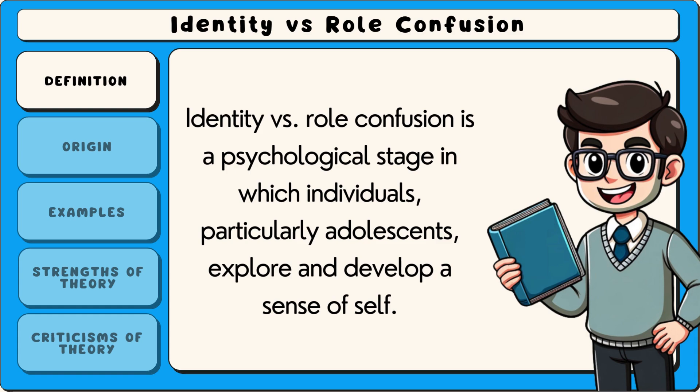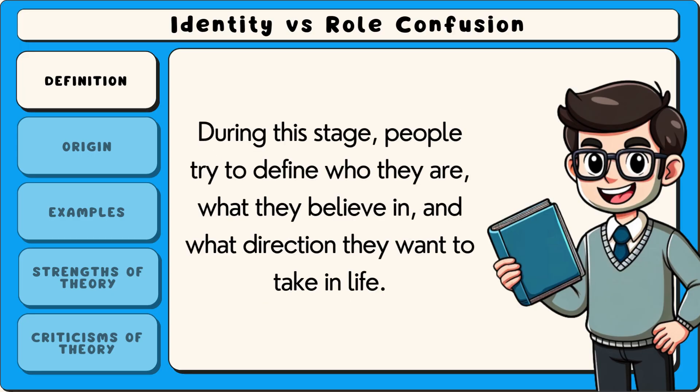Identity versus role confusion is a psychological stage in which individuals, particularly adolescents, explore and develop a sense of self. During this stage, people try to define who they are, what they believe in, and what direction they want to take in life.